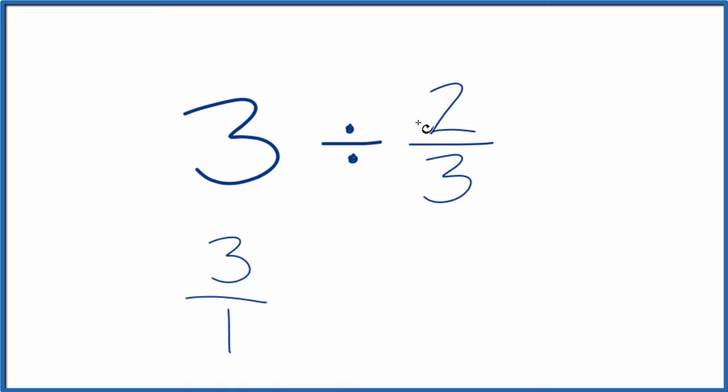Instead of division, let's use multiplication. We're going to multiply by the reciprocal of 2 thirds. So we move the numerator to the bottom, denominator to the top. The reciprocal of 2 thirds is 3 halves.